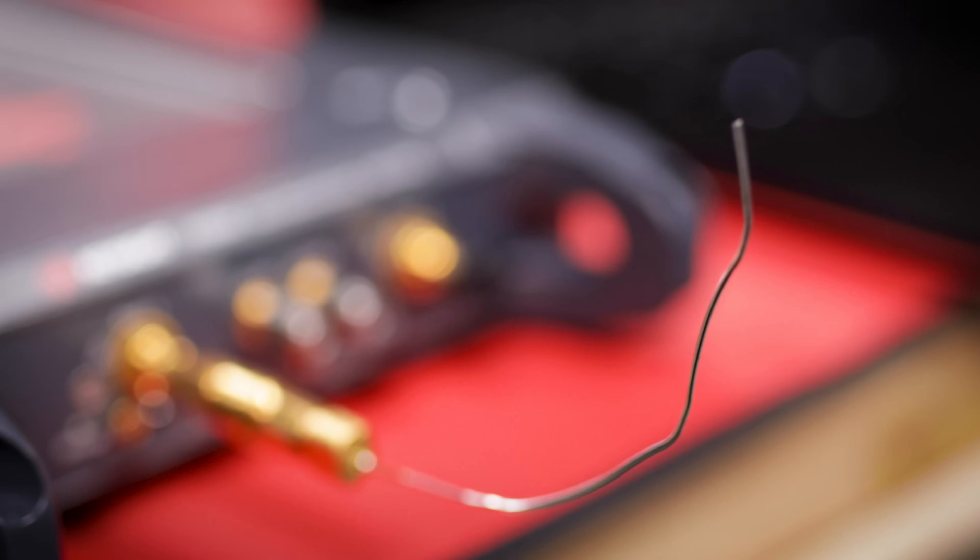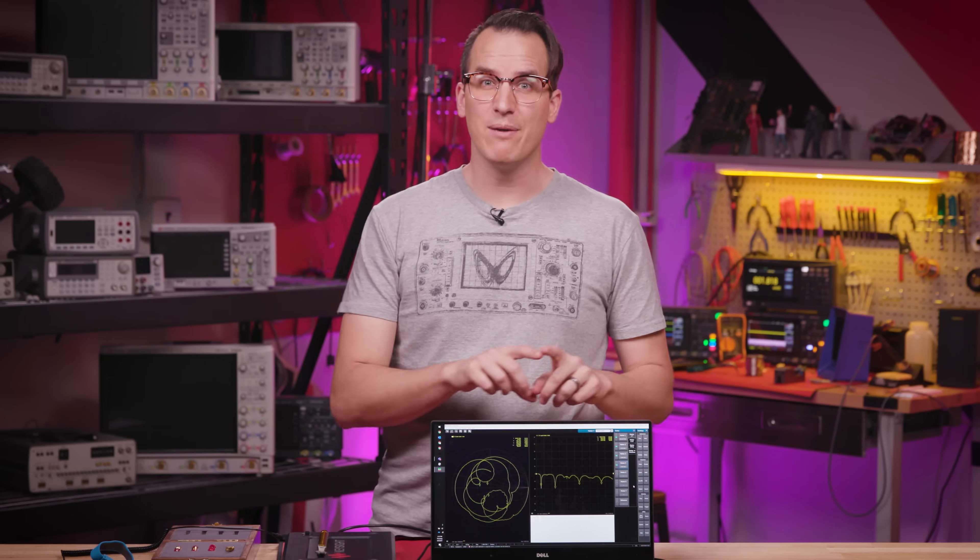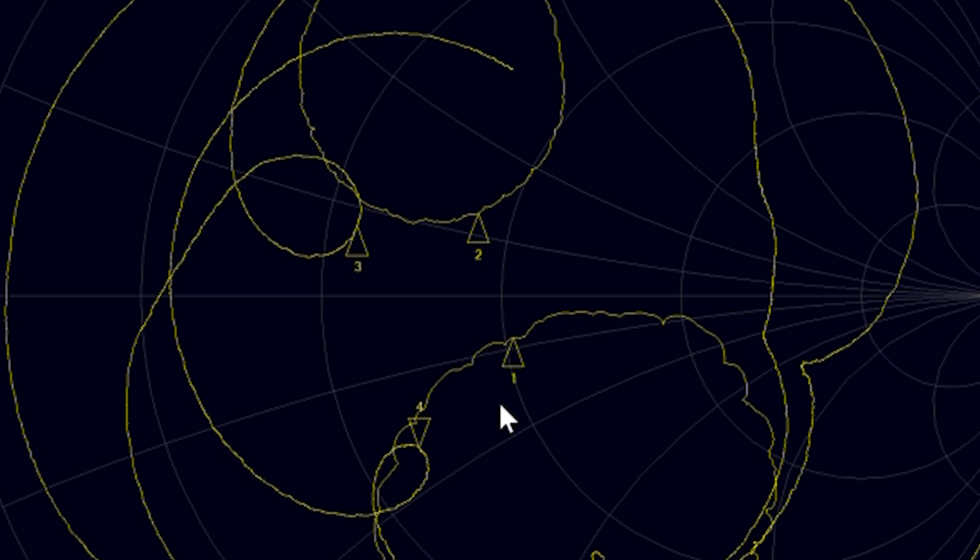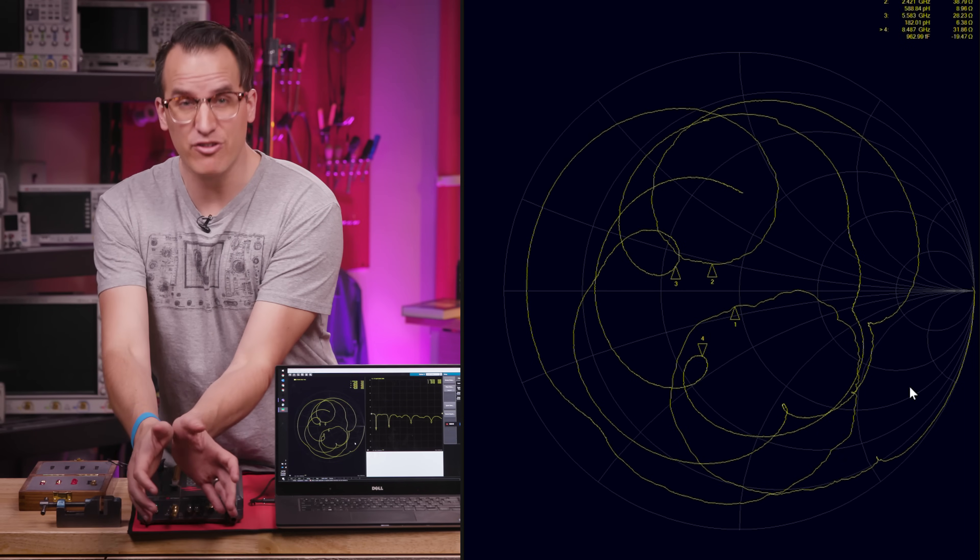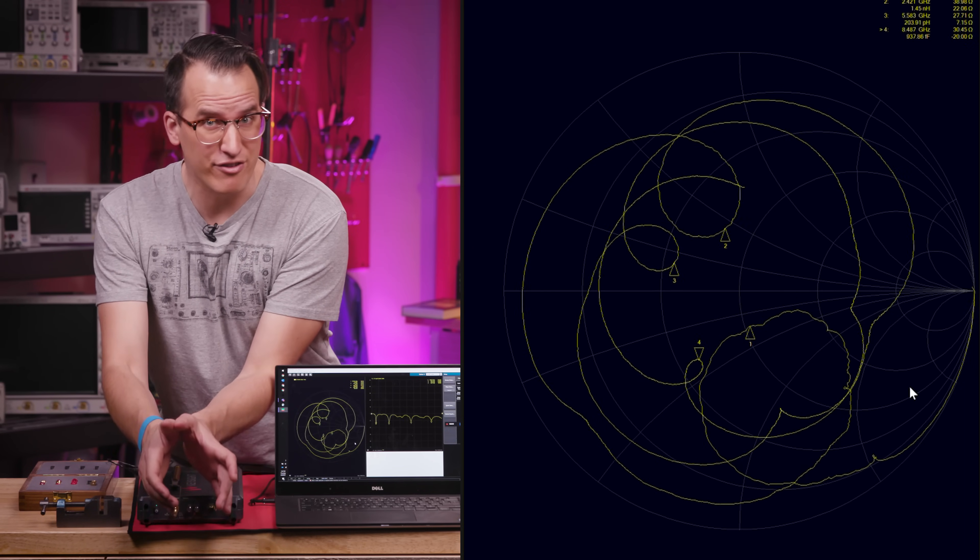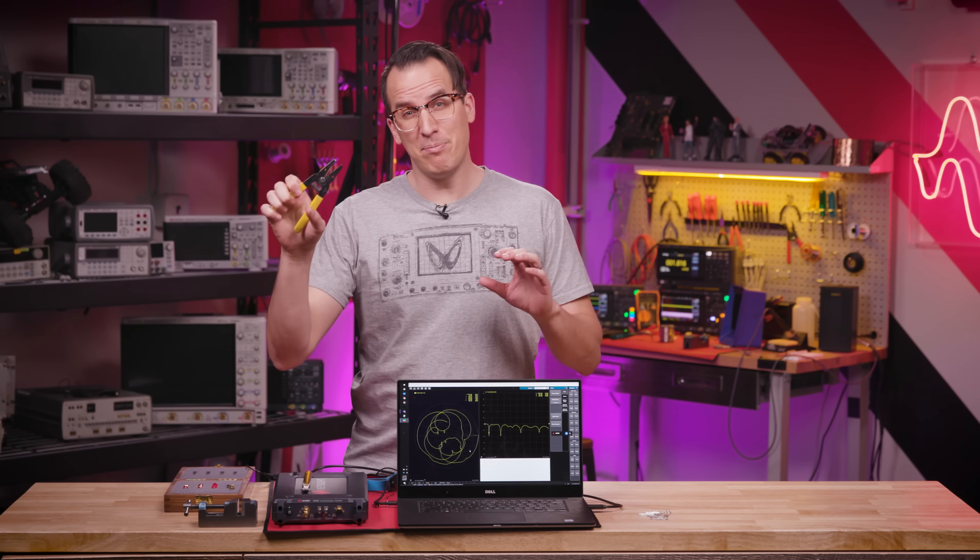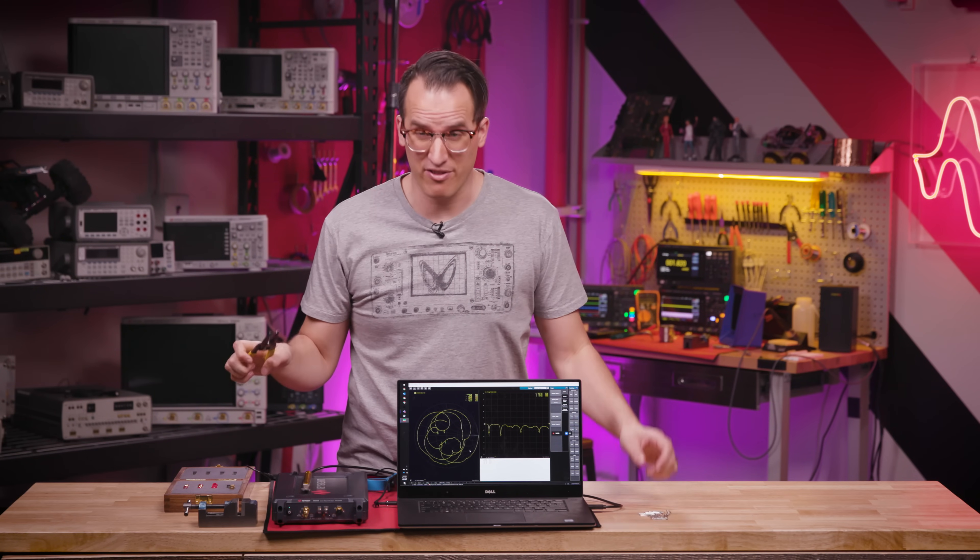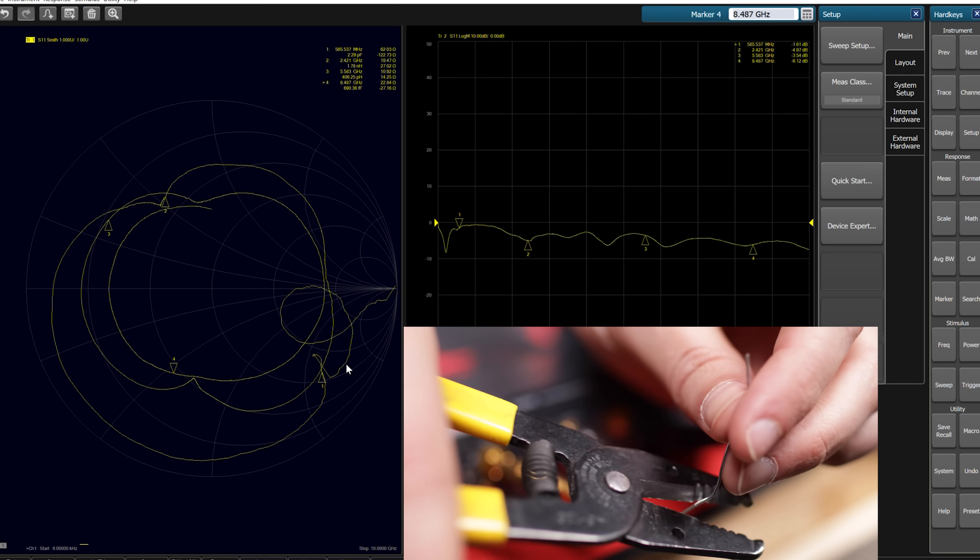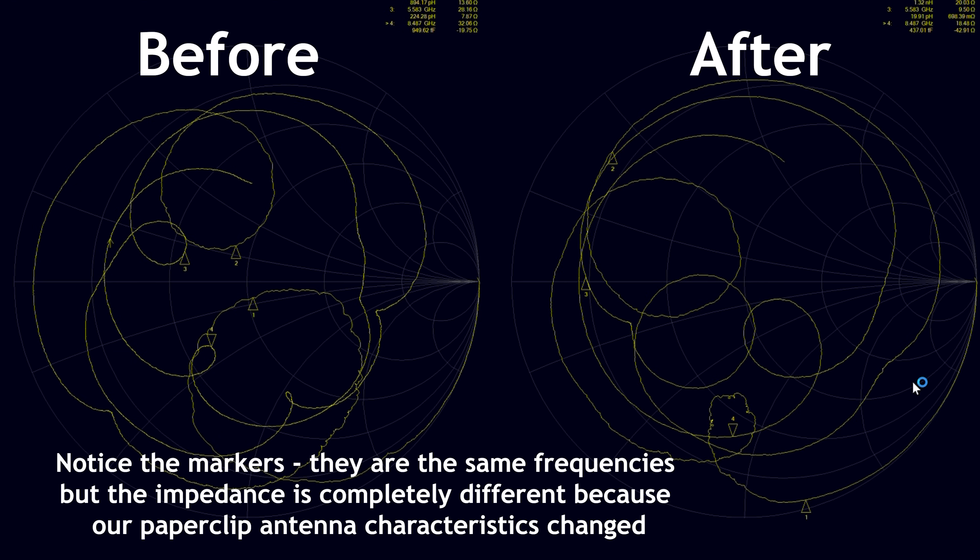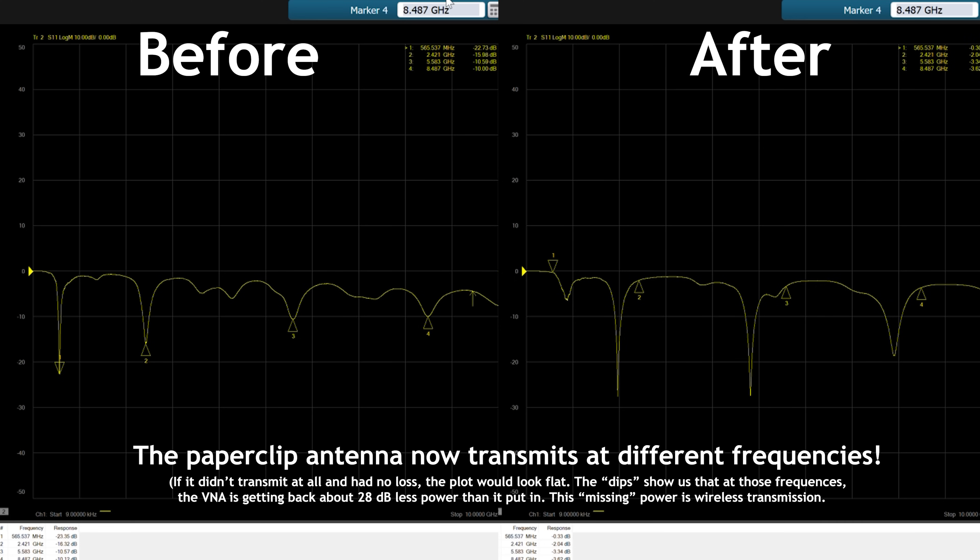In this case, transmission is the large majority of what's happening. On the Smith chart, we can put markers at the same frequencies as we see the dips, and notice that these are the points closest to our home base in the middle of the Smith chart. If I get close to the clip without touching it, we can see that the characteristics change. This is why a theremin works. Clipping the length should definitely change its performance. Oh, not too bad. We could probably tune it. Everything shifted over.